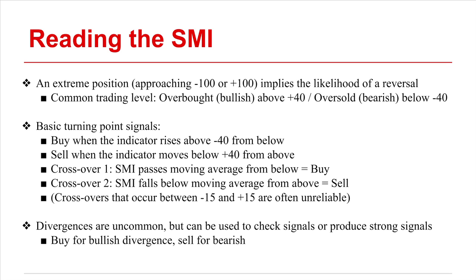On a basic level, the closer the indicator's value is to one of these extremes, the more likely a reversal will occur in the direction of the trend. A common standard is that any value above positive 40 implies that an asset is overbought and likely to face a pullback, whereas values below negative 40 suggest that the asset is oversold and may be approaching a turning point. An increase beyond positive 40 constitutes an opportunity to sell in anticipation of a pullback, whereas a decrease below negative 40 constitutes an opportunity to buy in anticipation of a positive trend.